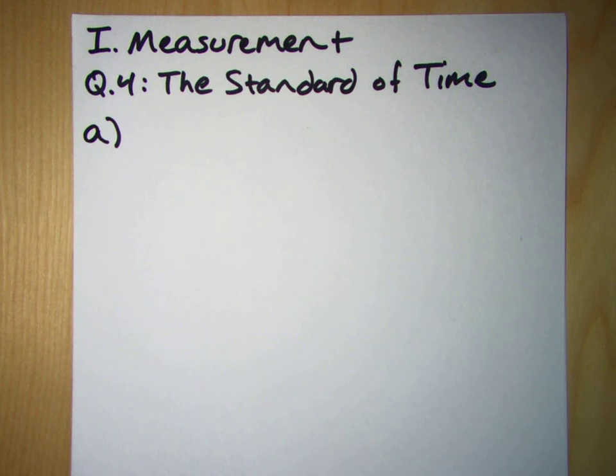Okay, this question has two parts. So here's part A. A unit of time sometimes used in microscopic physics is a shake. One shake equals 10 to the minus 8 seconds. Are there more shakes in a second than there are seconds in a year? Let's start with that.